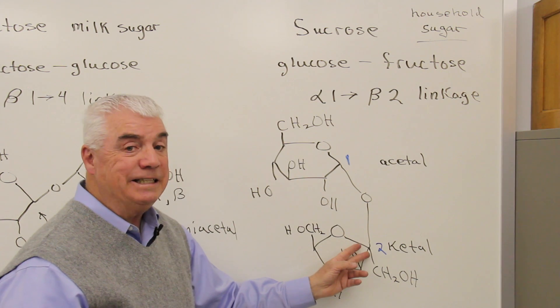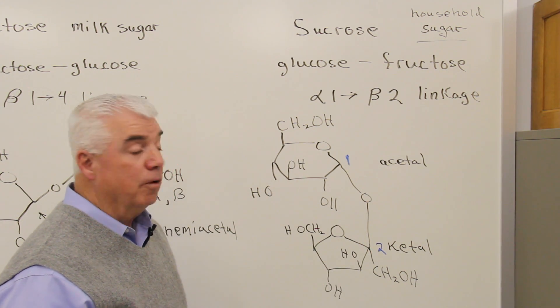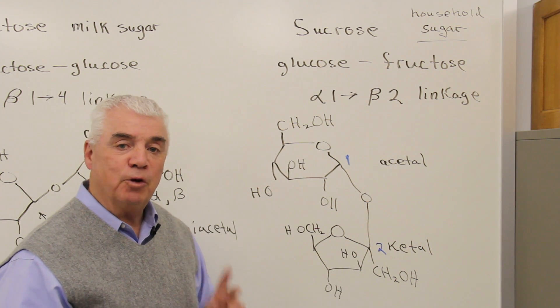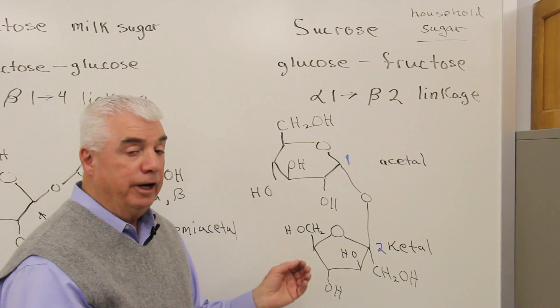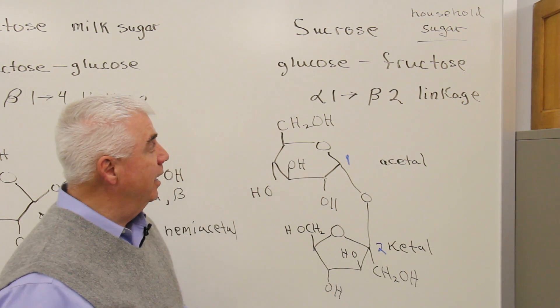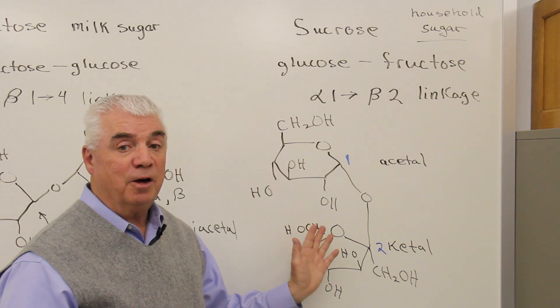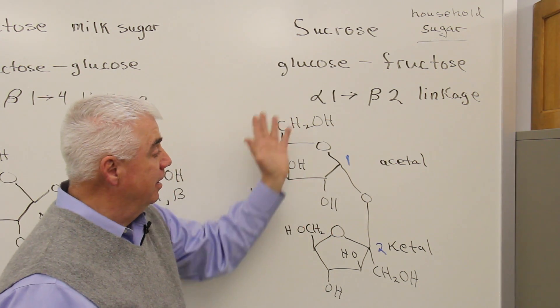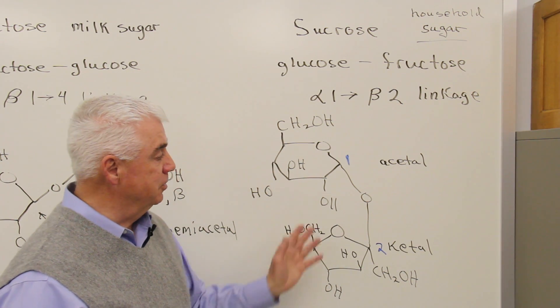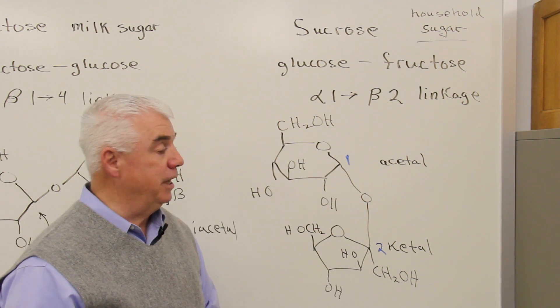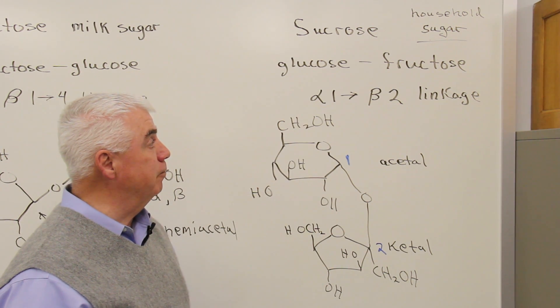Up here, we have an acetal linkage. Here we have a ketal, and neither one of these are hemi. So there's only one form of sucrose. It's not opening and closing to an aldehyde form. And so sucrose, when you talk about the reactions of disaccharides, it's not a reducing sugar because the ring form just stays that way. There's no open chain form.